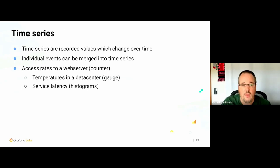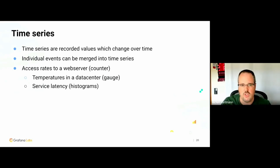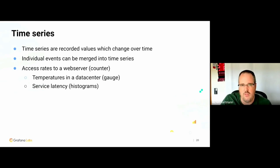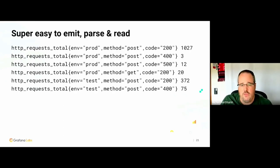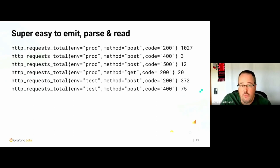So what are time series? Time series are recorded values which change over time. If you have a lot of individual events which matter, you can merge them into time series and just count them, or something which goes up and down. Temperatures in a data center, service latency, but also the price of a stock or how many coins have been mined — all of these are basically time series. It's super easy to emit all of this towards the Prometheus ecosystem. If you want to write a function in Excel or similar, that is actually doable.